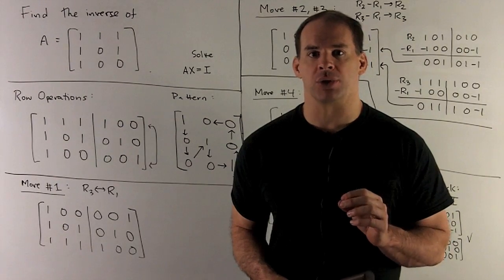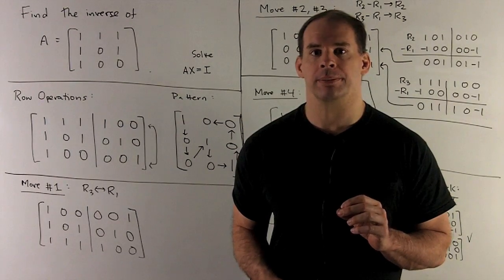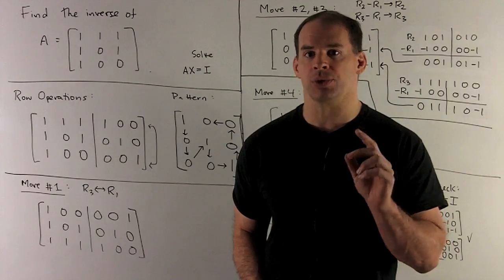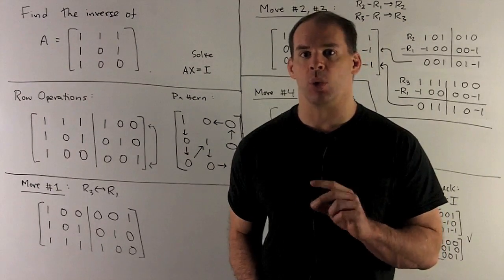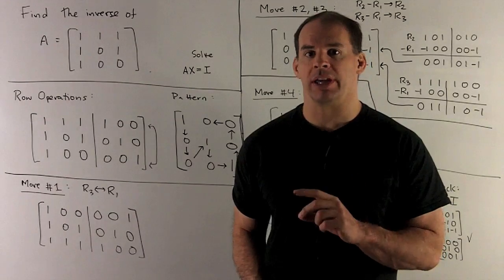Find the inverse of the following matrix using row reduction. Our matrix is A equal to row 1 is 1, 1, 1, row 2 is 1, 0, 1, row 3 is 1, 0, 0.